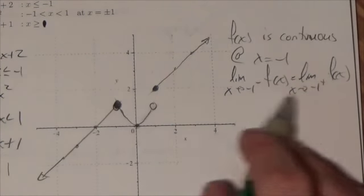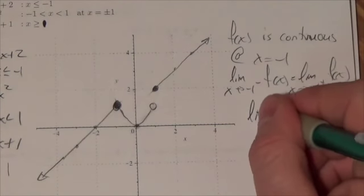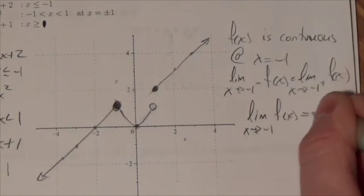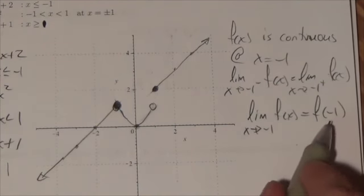But again, the fact that the limit exists doesn't guarantee continuity. What guarantees continuity is that the limit as x approaches negative 1 of f of x is equal to f of negative 1. The fact that the function exists there.